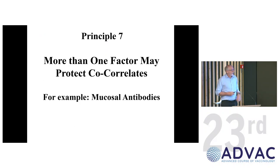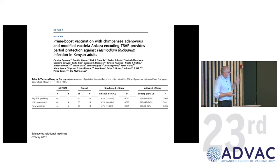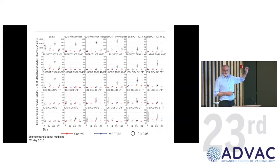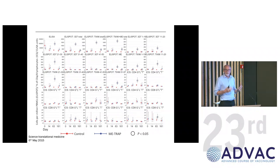Another complexity is that often there's more than one factor involved in protection. This is a study of a chimpanzee adenovirus and a second viral vector MVA encoding a malaria antigen. They measured many different things and had some efficacy, but there were lots of different features correlating with protection — not just one thing. There were T cell ELISPOT correlates, ELISA correlates — anything with a circle around it was significant. This suggests many different bits of the immune system working together, and yet we generally try to focus on one thing because it's easier, when the reality is probably much more complex.